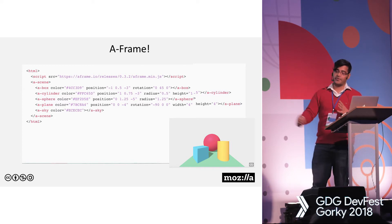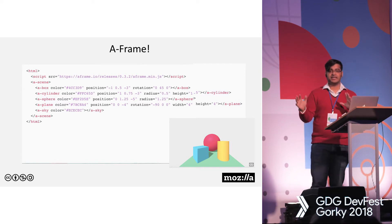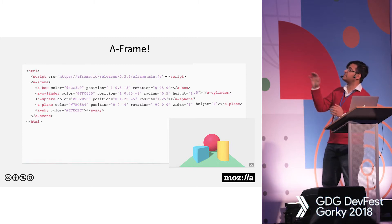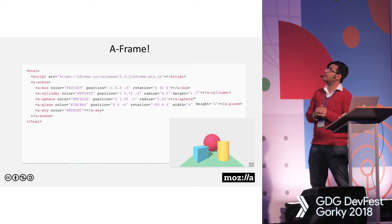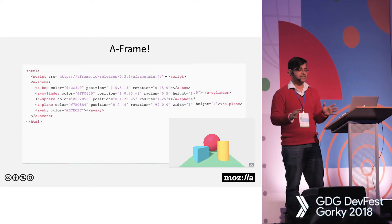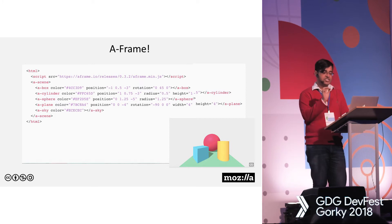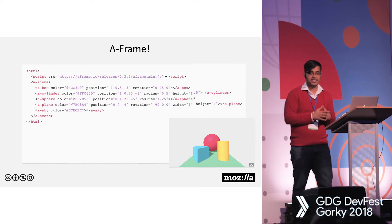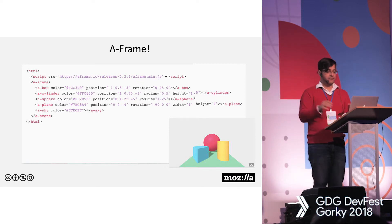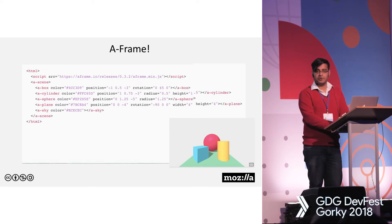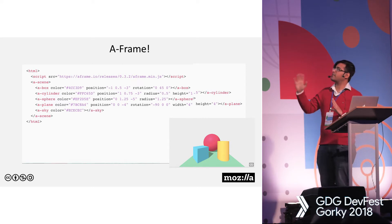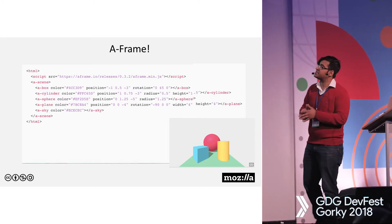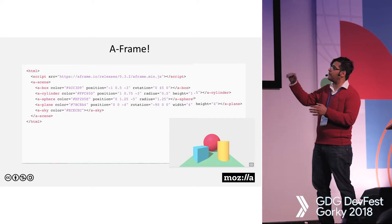This is a Hello World program written using A-Frame. As you can see, it's just HTML. One line with a script tag includes the A-Frame minified library — no build steps required, no installs. One line of HTML with A-Scene handles components like canvas, camera, renderer, lights, controls, WebVR polyfill, and VR effect. We put our stuff inside A-Scene. We're using some primitive object types like box, cylinder, sphere, and plane, using attributes like position and rotation with X, Y, Z axis to align them with the scene.